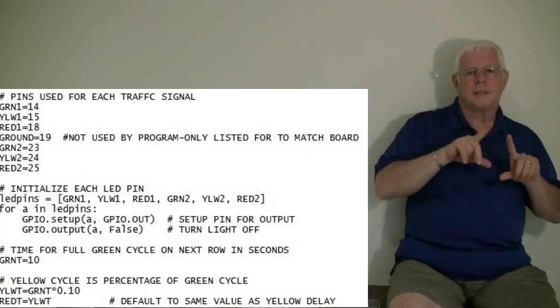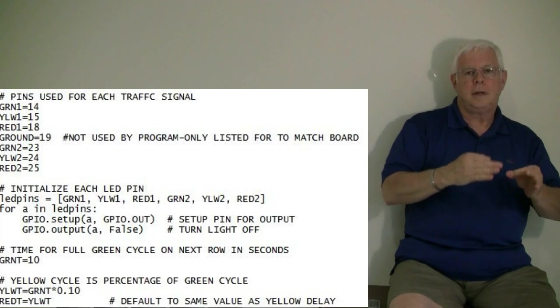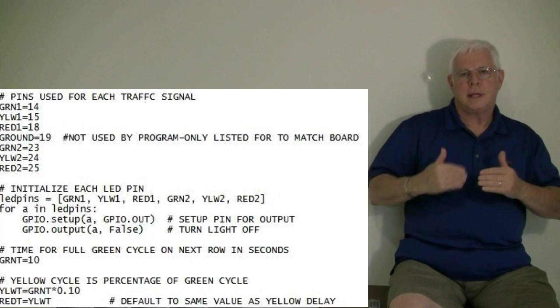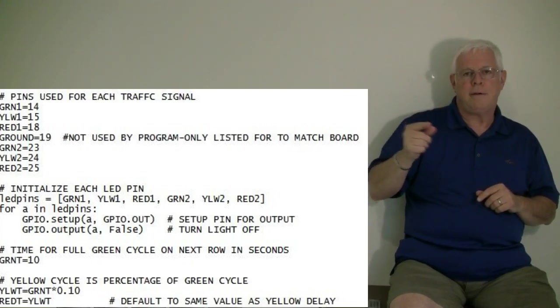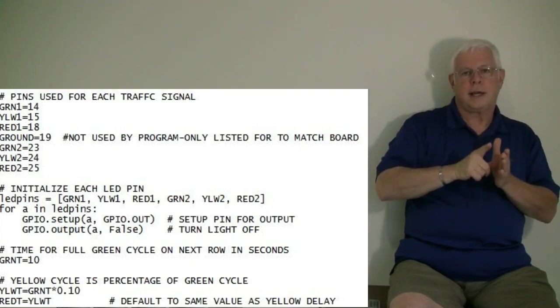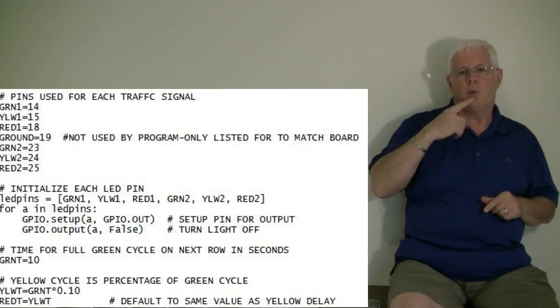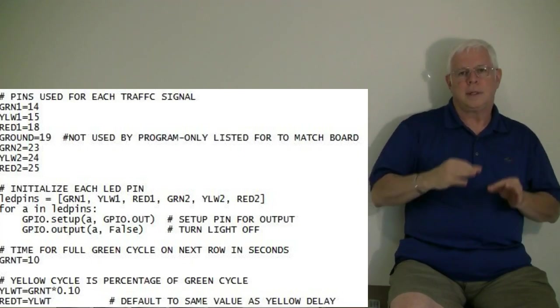The next three statements set up the time delay. For green, it's going to be a 10 second delay. And then for yellow, it's 10% of the green, so 10% of 10 is one second delay for yellow. And then the red delay is going to be the same as the yellow delay.